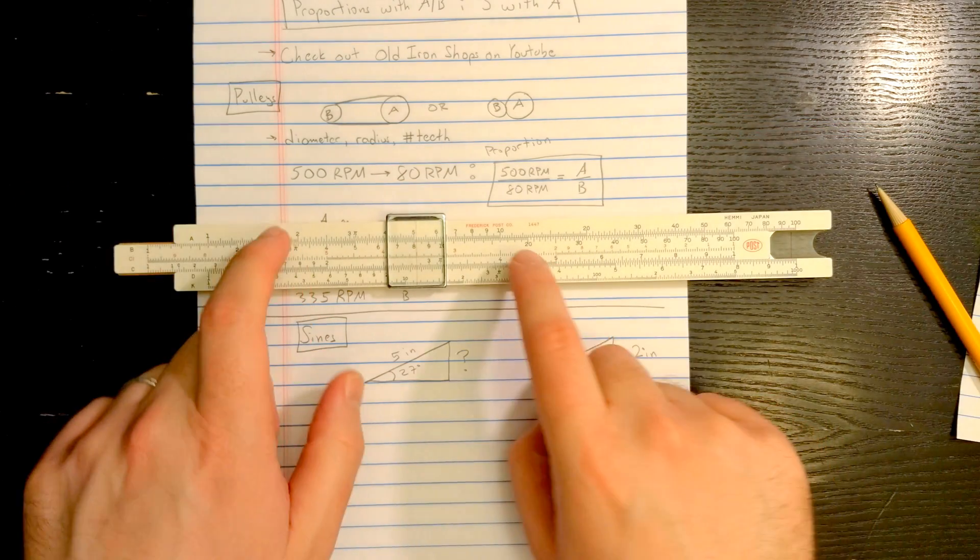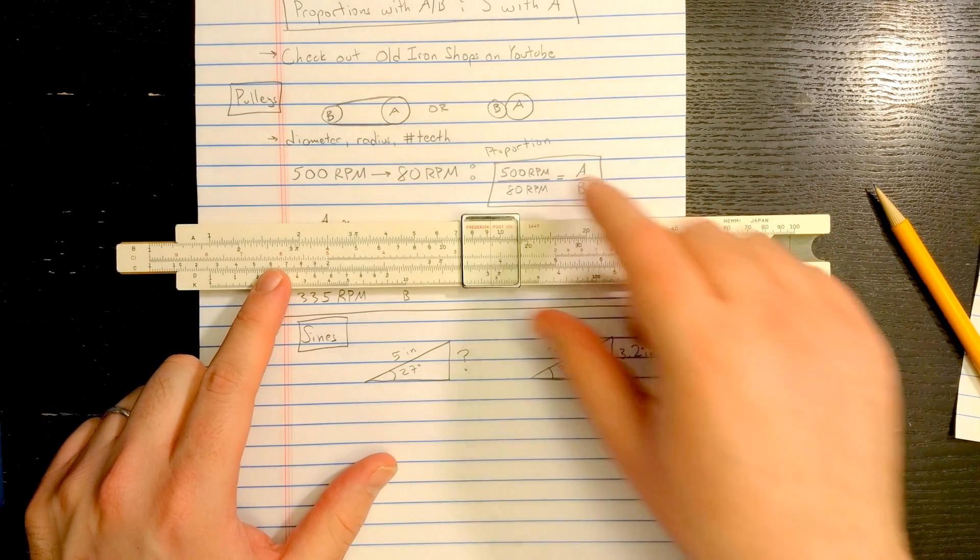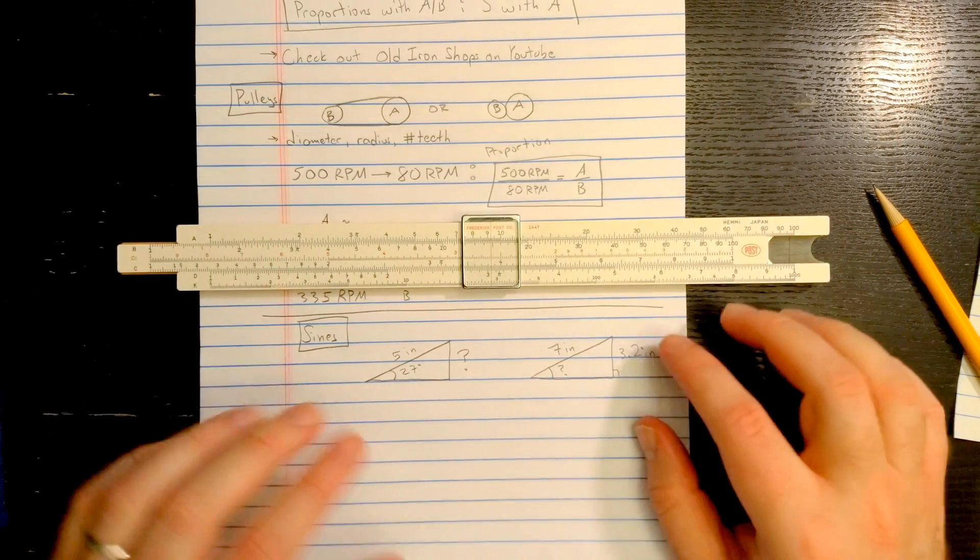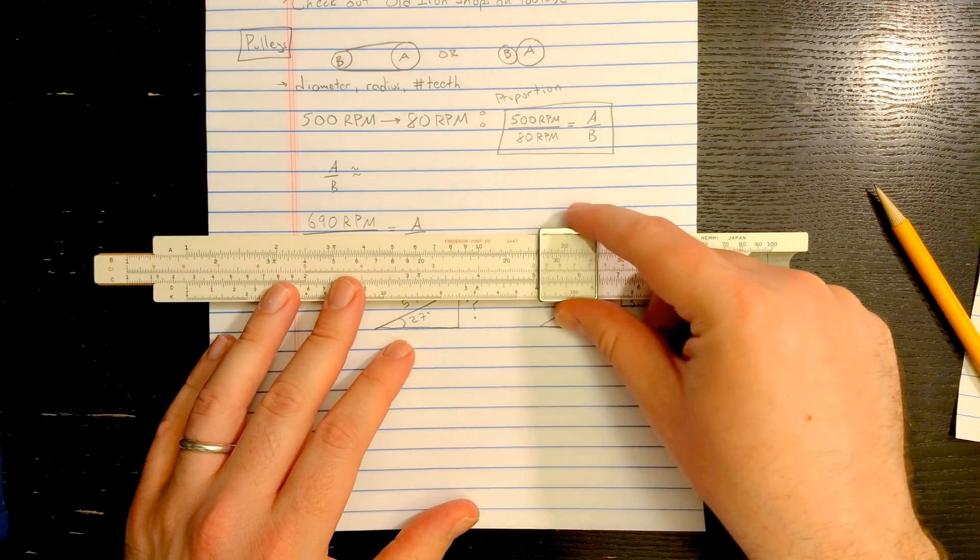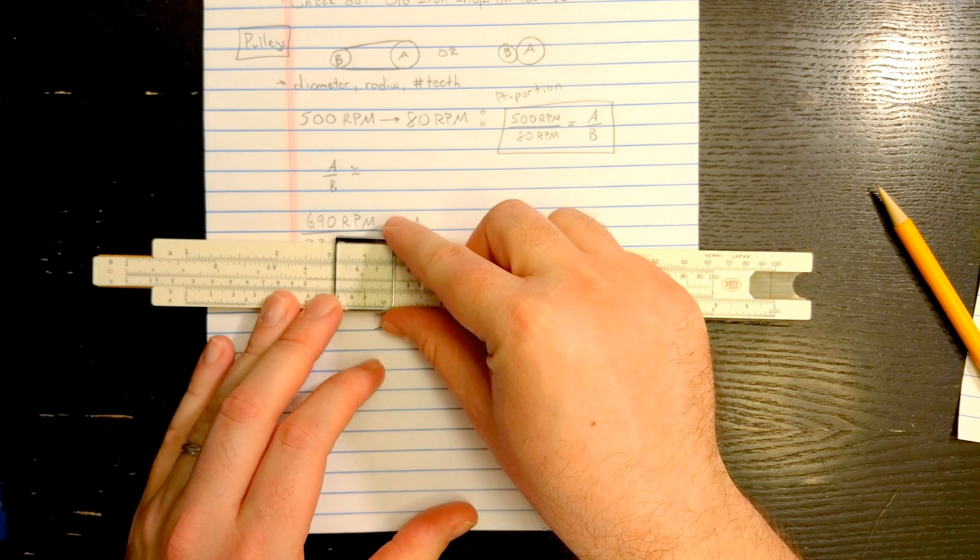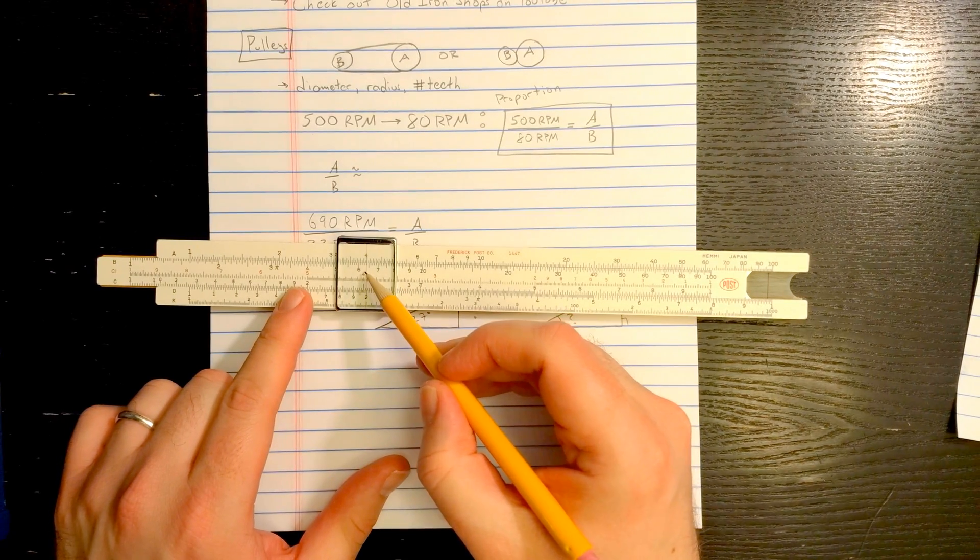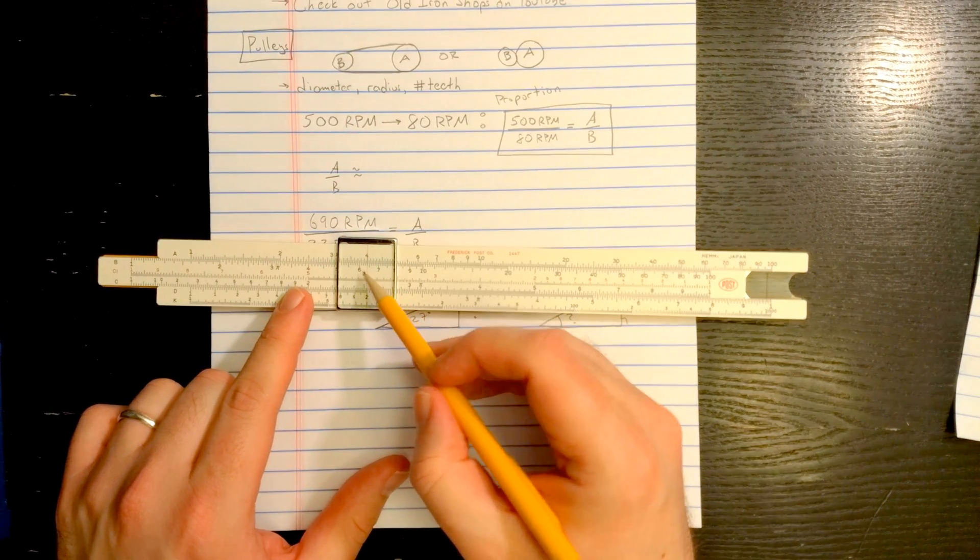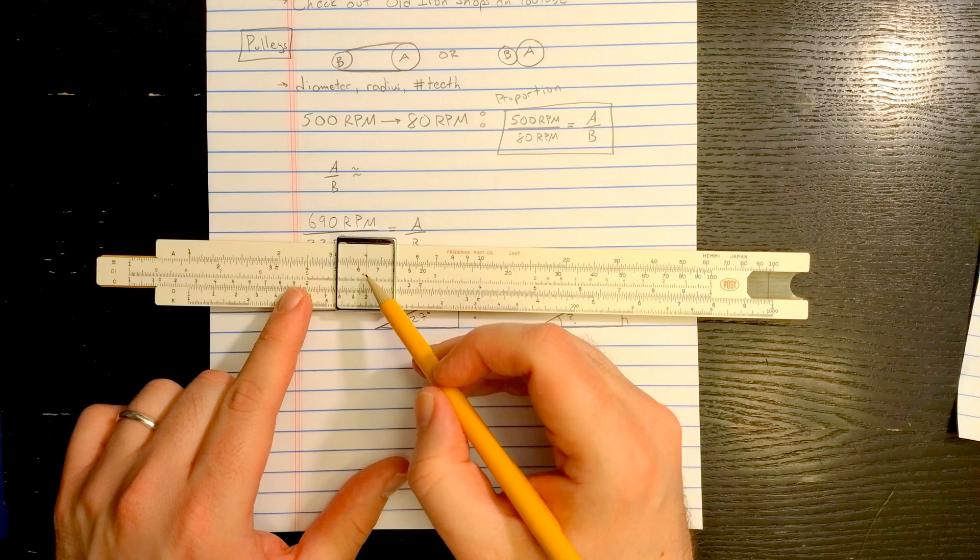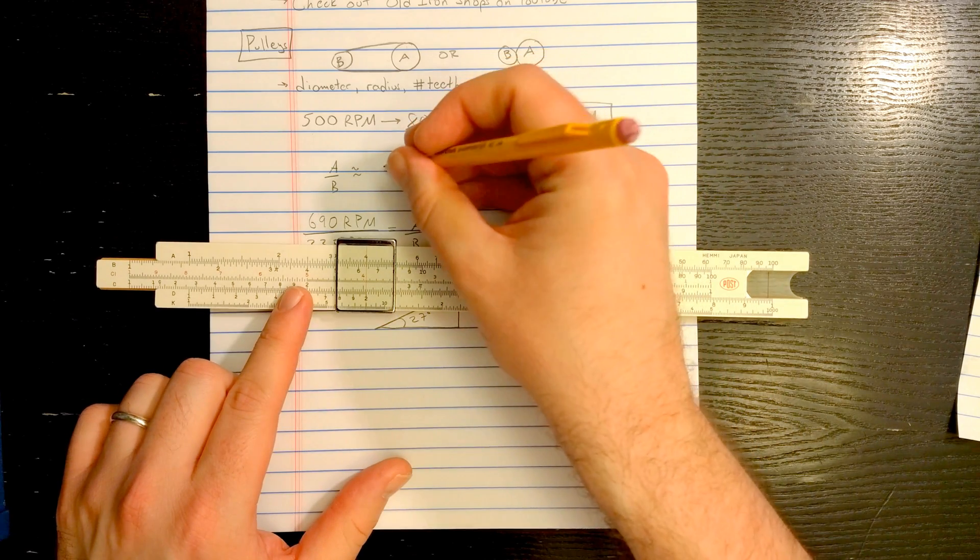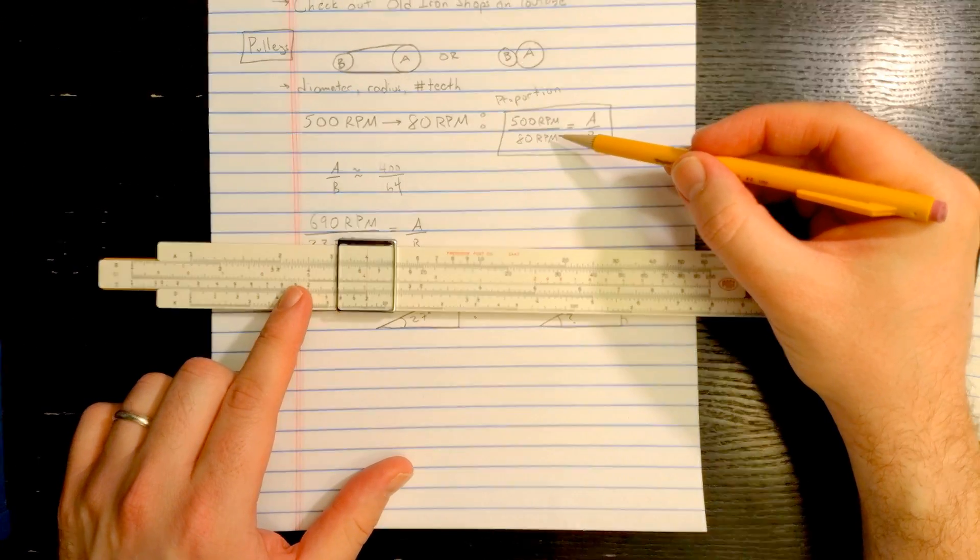Now that I've done that, anywhere on the A and B scale that I put the hairline, I'll read the same ratio as 500 to 800. So for example, if I move say to 4, which I could interpret as 400, and I look under the 4, what I see is 6.4. So here's 6.1, 2, 3, 4, here's 6, 5, and here's up to 7. So that's a 6.4 mark. But if I'm talking 400 on A, then I must be talking 64 on B if I'm talking about this ratio.